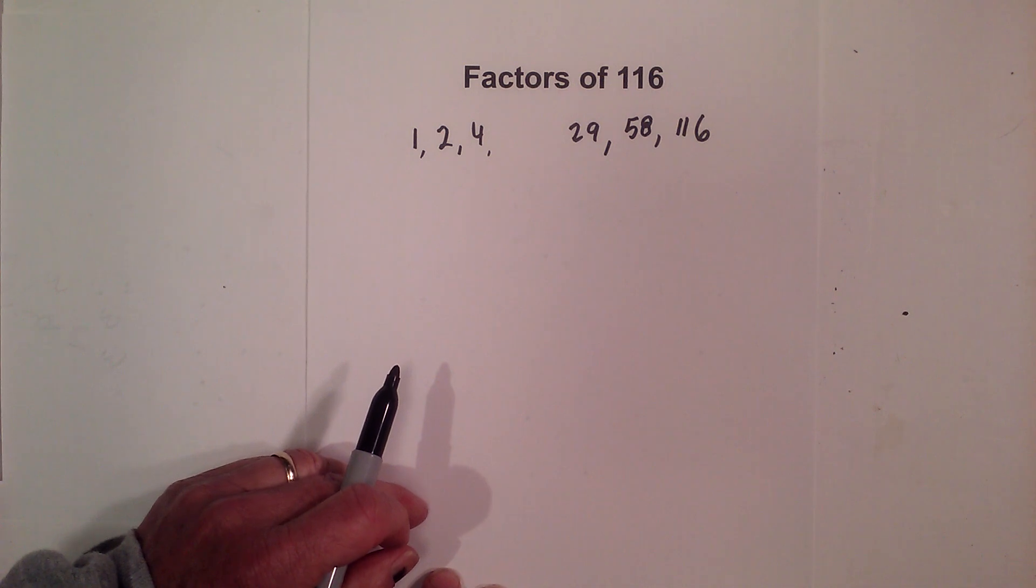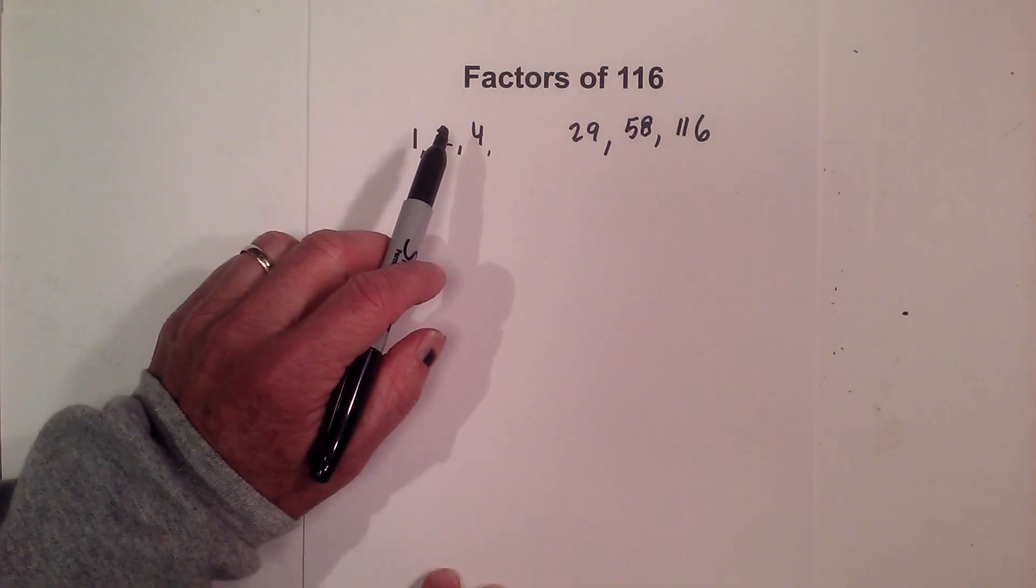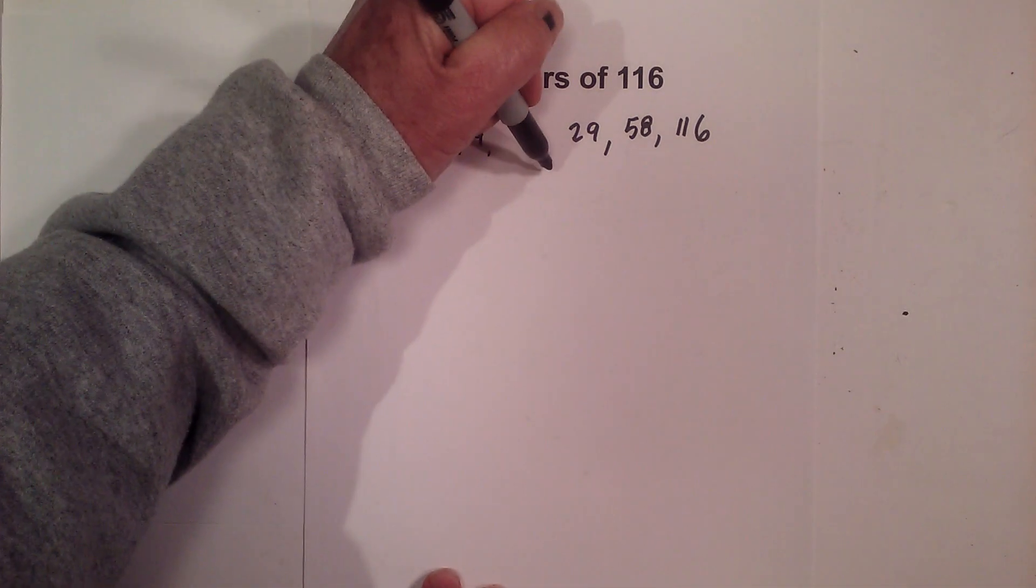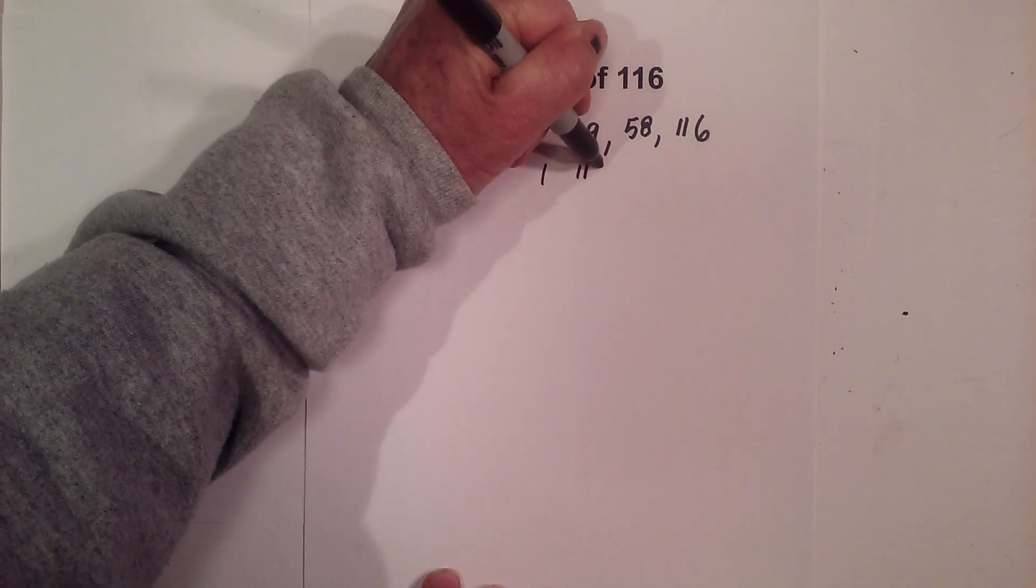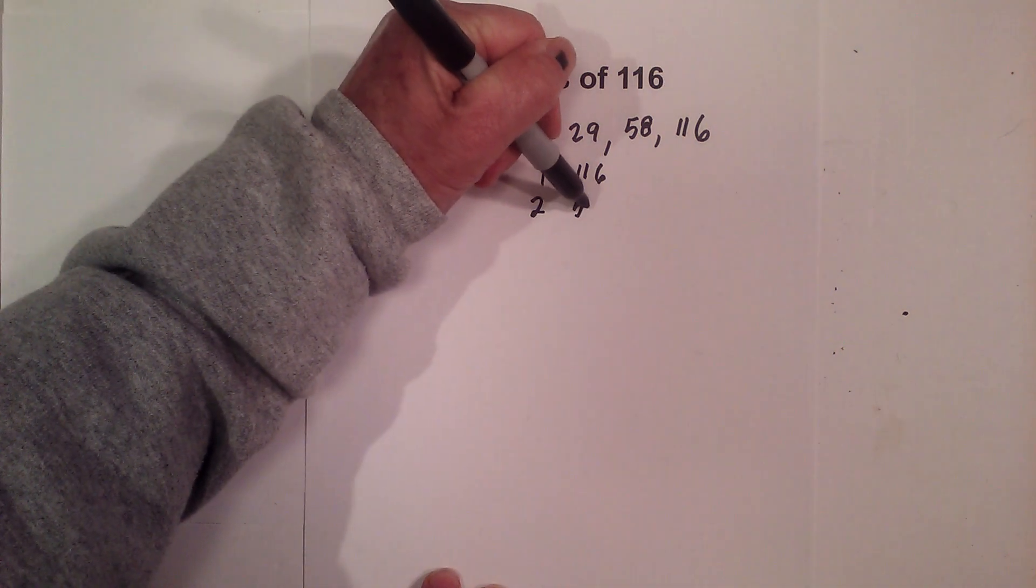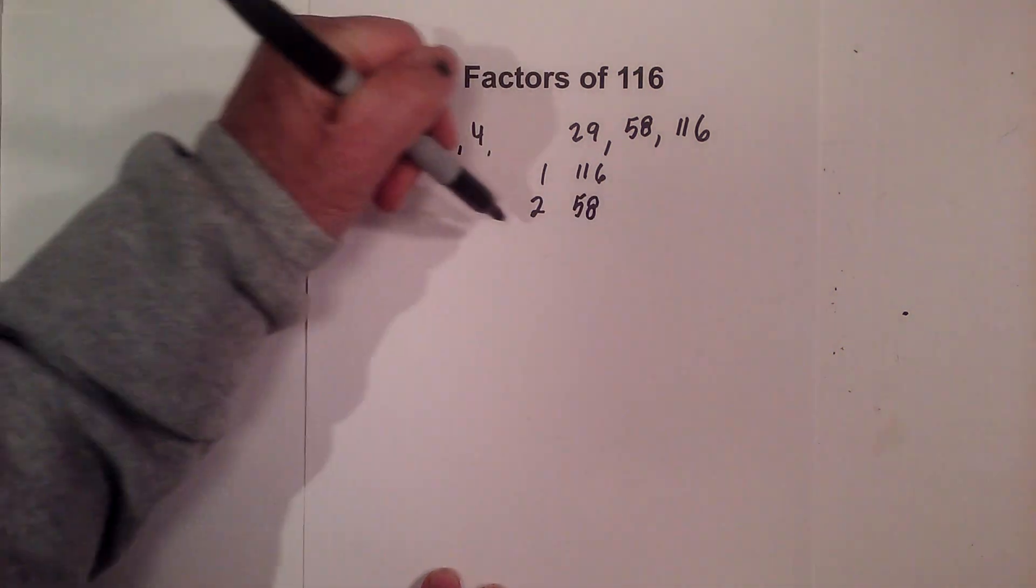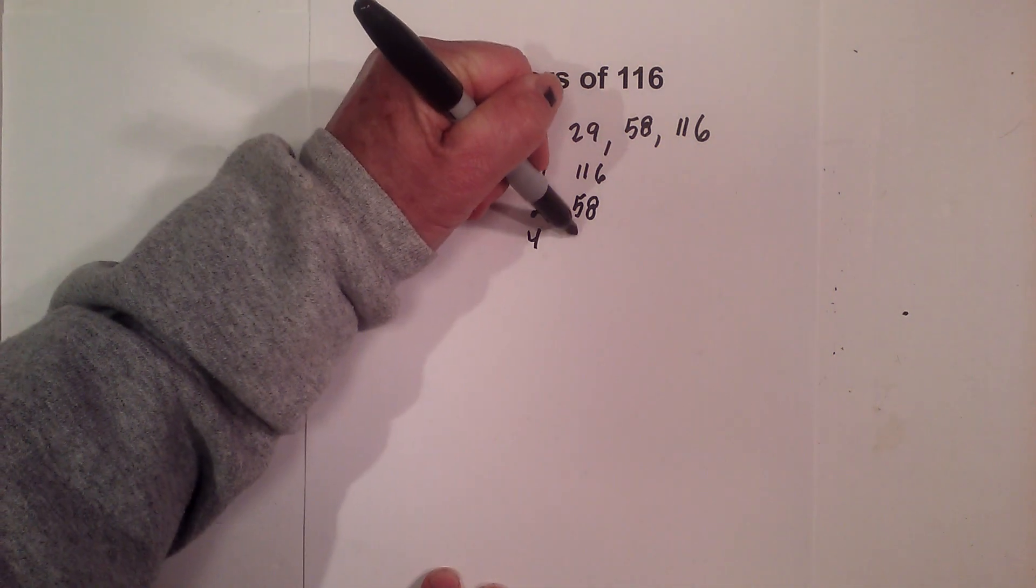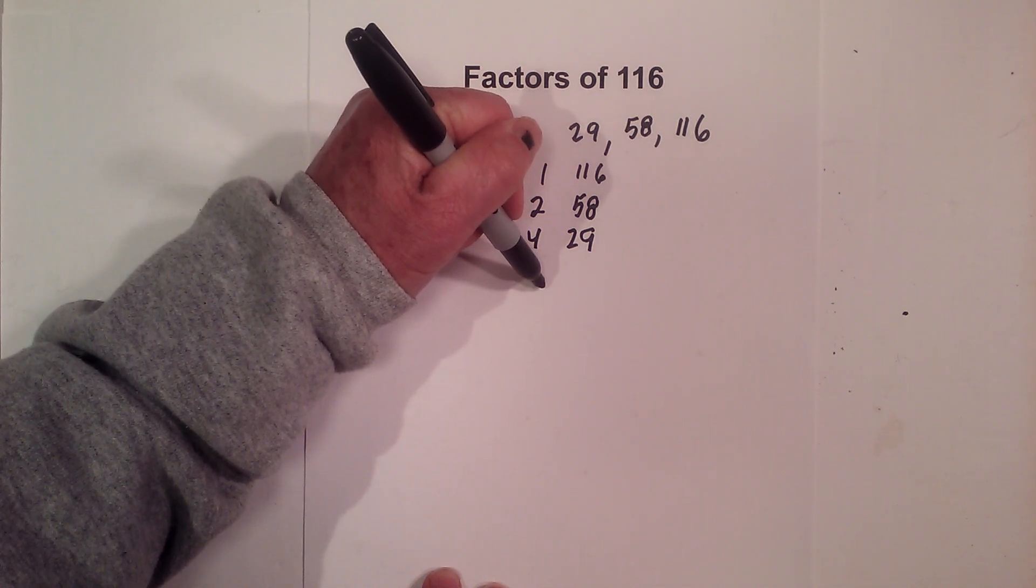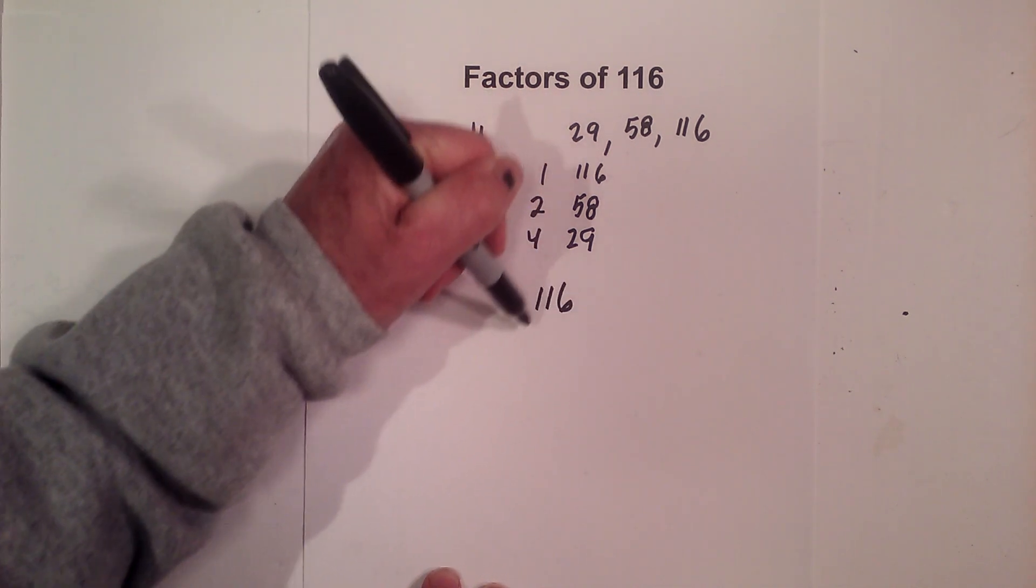So the factors of 116 are 1, 2, 4, 29, 58, 116. And in pairs it looks like this: 1 times 116, 2 times 58, and 4 times 29. Now let's complete a factor tree.